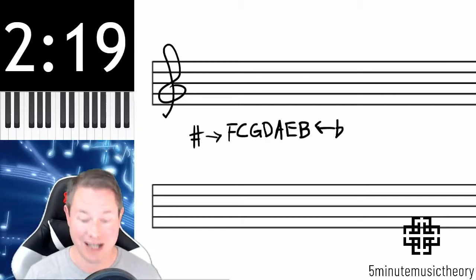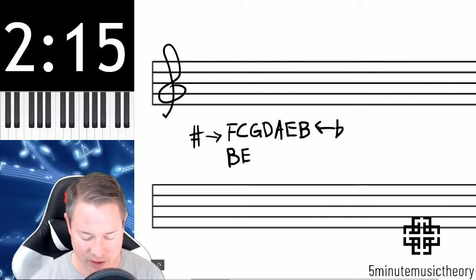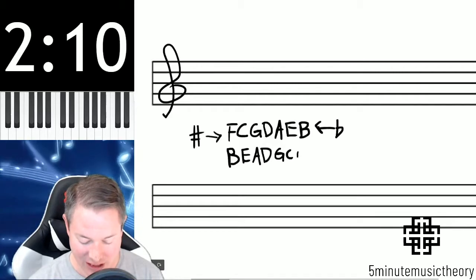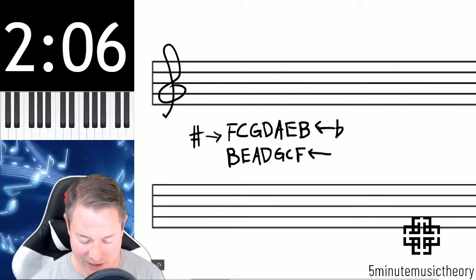It starts with B and it goes B, E, A, D, G, C, F. For some people it's easier to remember the order of the flats because it actually starts with the word bead and then G, C, F at the end. And if you can just remember the bead and then the G, C, F, then you're good.